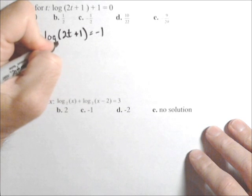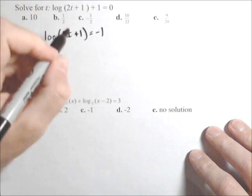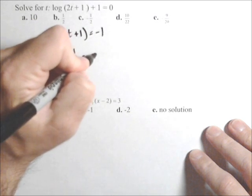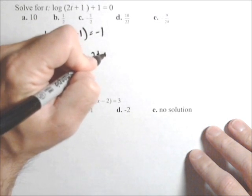Now this is a base 10, because there's no base there. So 10 to the negative one equals 2t plus one.